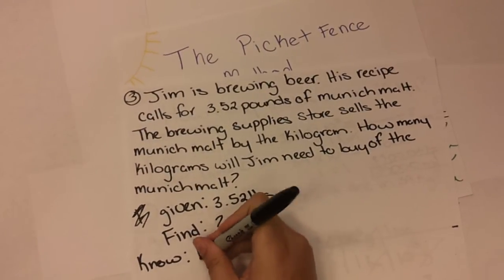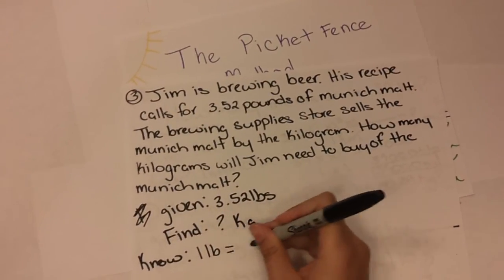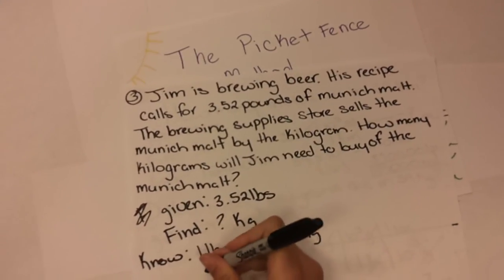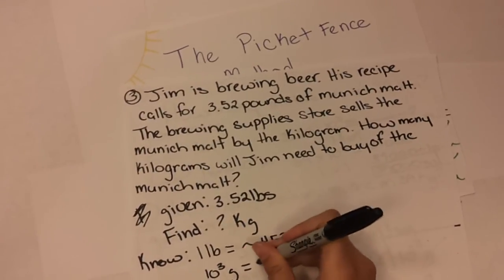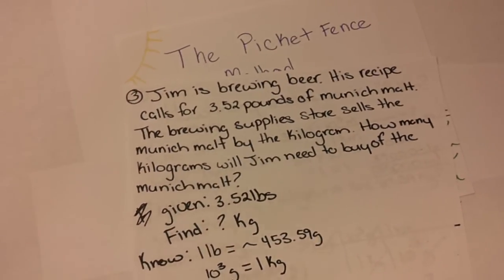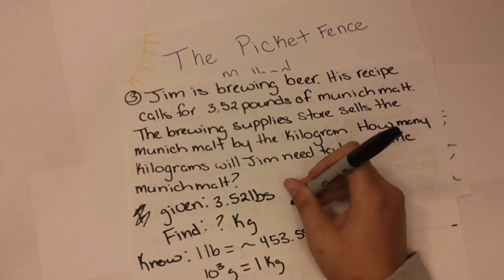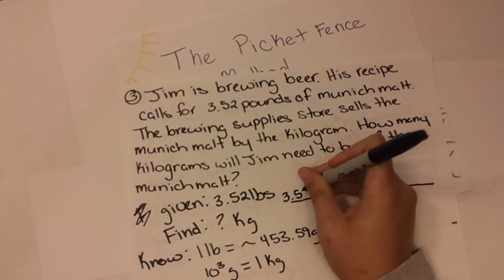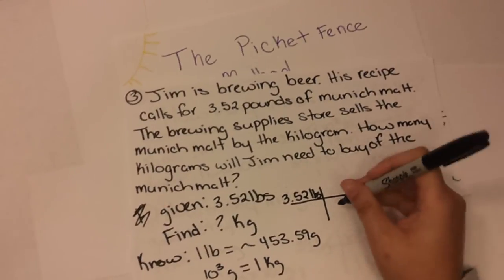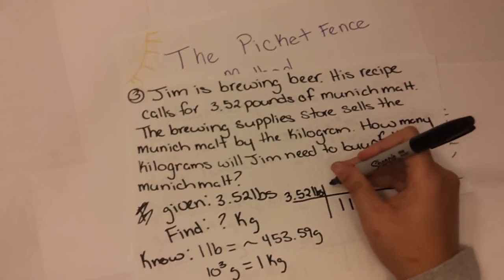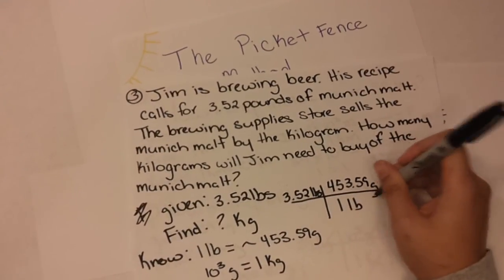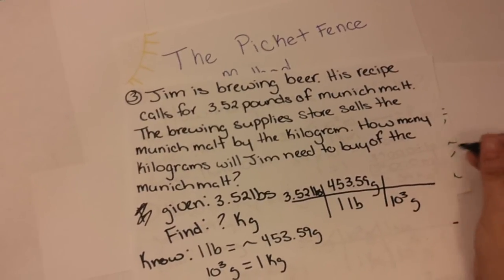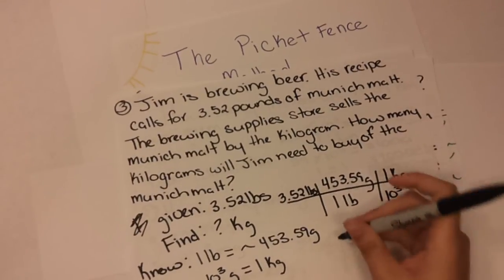We have one pound is equal to approximately 453.59 grams, and 10 to the third grams is equal to 1 kilogram. And that's all we really need to know for that conversion. Draw our picket fence out right here. We have 3.52 pounds. In one pound there's 453.59 grams. And in 10 to the third grams, there's 1 kilogram. Which equals.